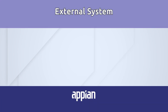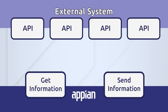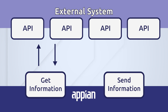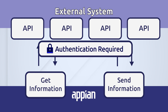Now imagine you are working on an Appian application that needs to connect to an external system. This external system has multiple different integration endpoints and services a wide range of requirements for your application. Some integrations are simply retrieving information, while others are sending information to be processed by the external system. Whatever your needs are, you need to access this specific external system to do any of that.